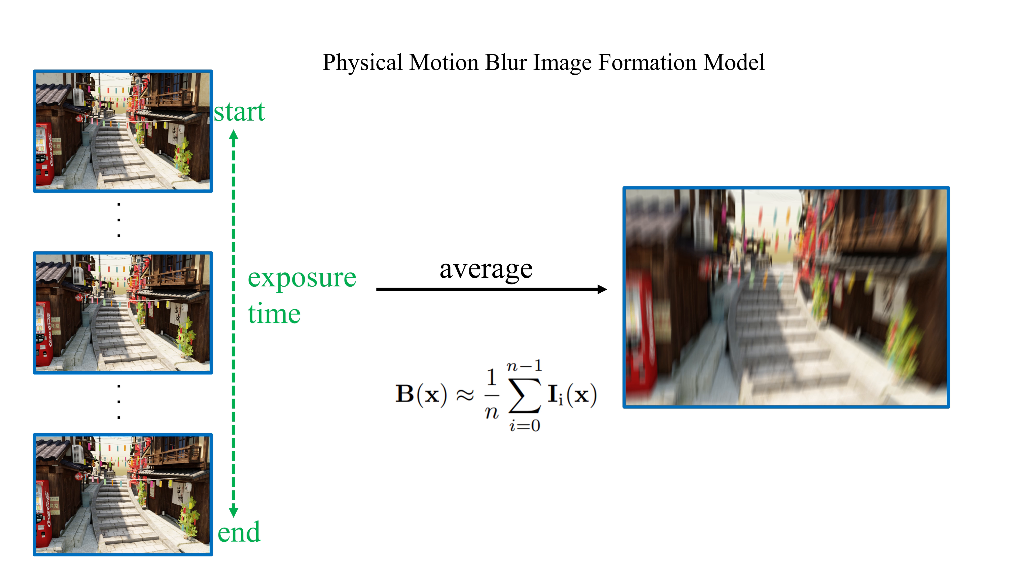Here we show the result of the vanilla NeRF which is trained with blurry inputs. This page shows our physical motion blur image formation model. The physical image formation process of a digital camera can be modeled mathematically as the integral of a set of virtual sharp images, which can be discretely approximated by the following formulation.